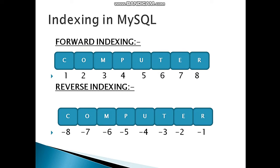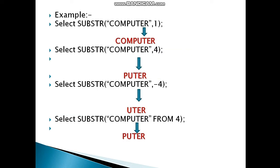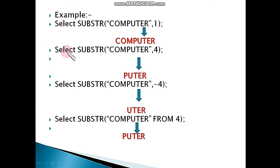Let's look at example one. The given string is 'computer' and the start position is one. As mentioned, in MySQL indexing starts from one, so at position one the character is 'c'. It starts counting from 'c' and returns all the remaining characters in the string as the output.